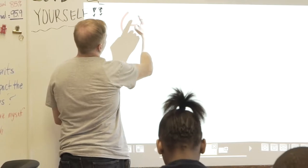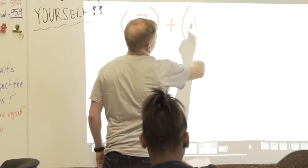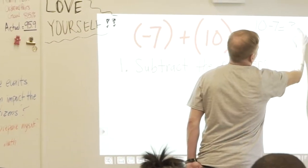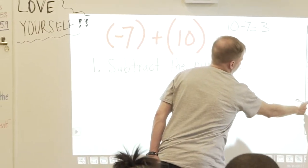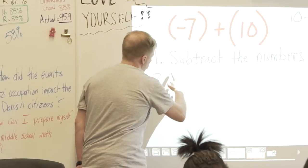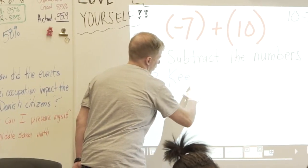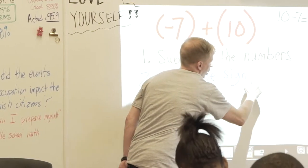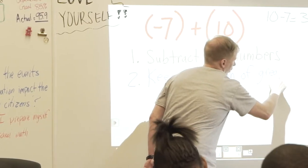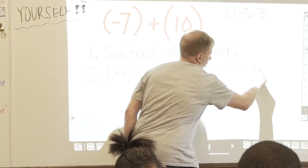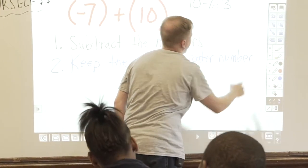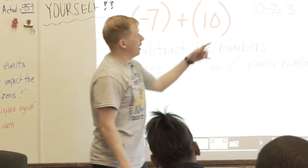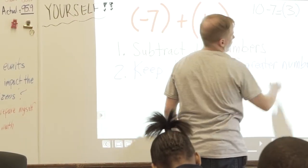What if I have negative seven plus positive ten? What's ten minus seven? Three. Now, this is the tricky part — this is the part that confuses us. Step two is you keep the sign of the greater number. Which number is bigger, the ten or the seven? Ten. Is ten positive or negative? Positive. So what's our answer going to be? Positive three.